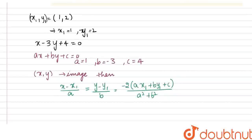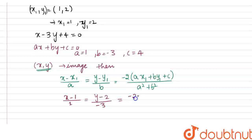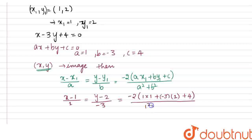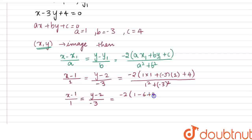We know all the values except x and y. Let us substitute our values into this equality. We get: (x minus 1) divided by 1, equal to (y minus 2) divided by minus 3, which is equal to minus 2 into (1 into 1 plus minus 3 into 2 plus 4) divided by (1 squared plus minus 3 whole squared).